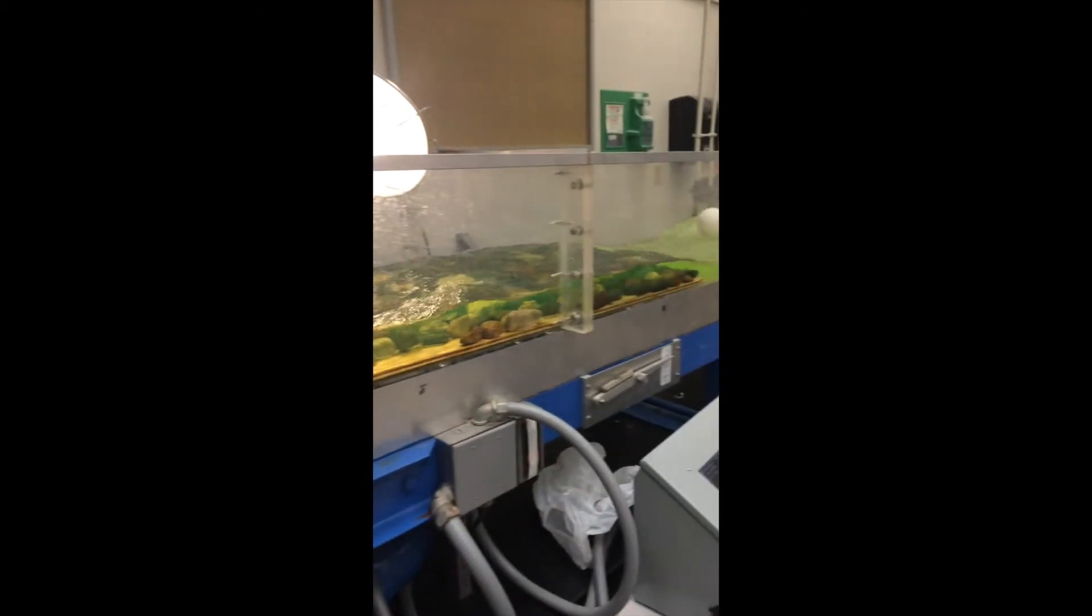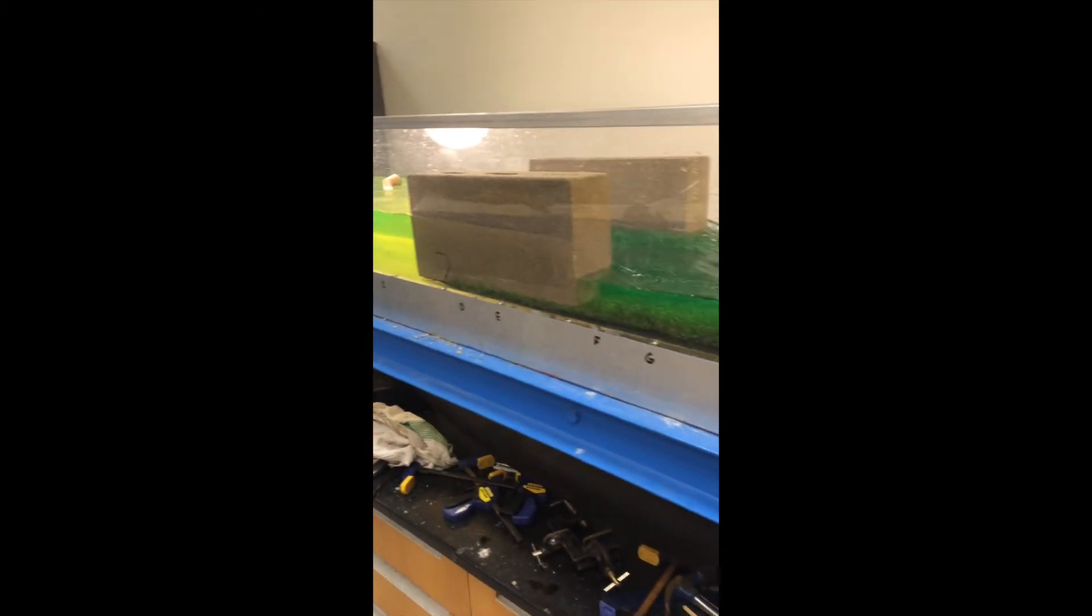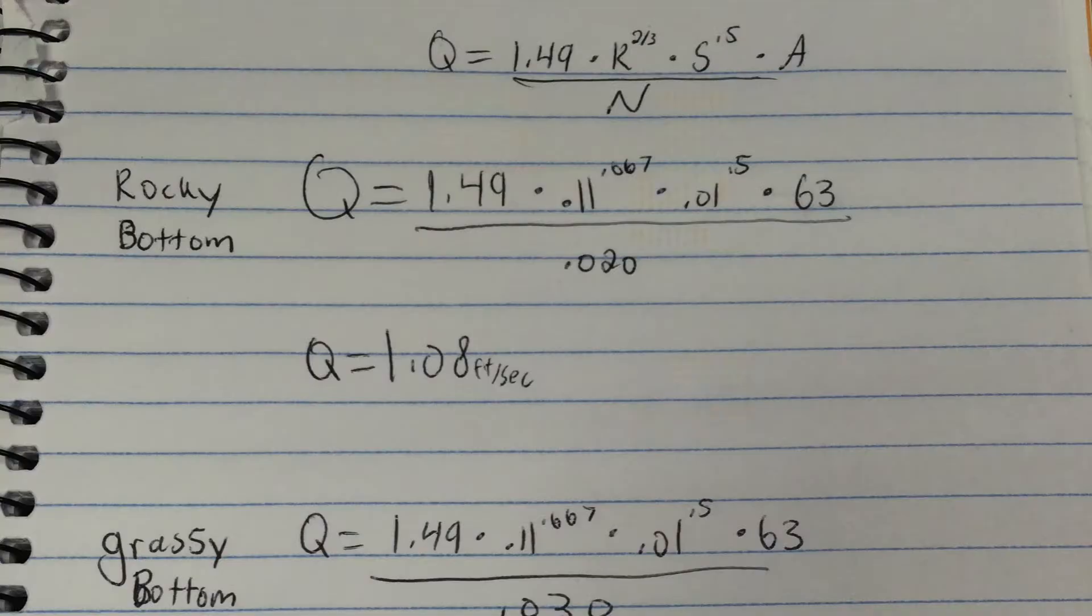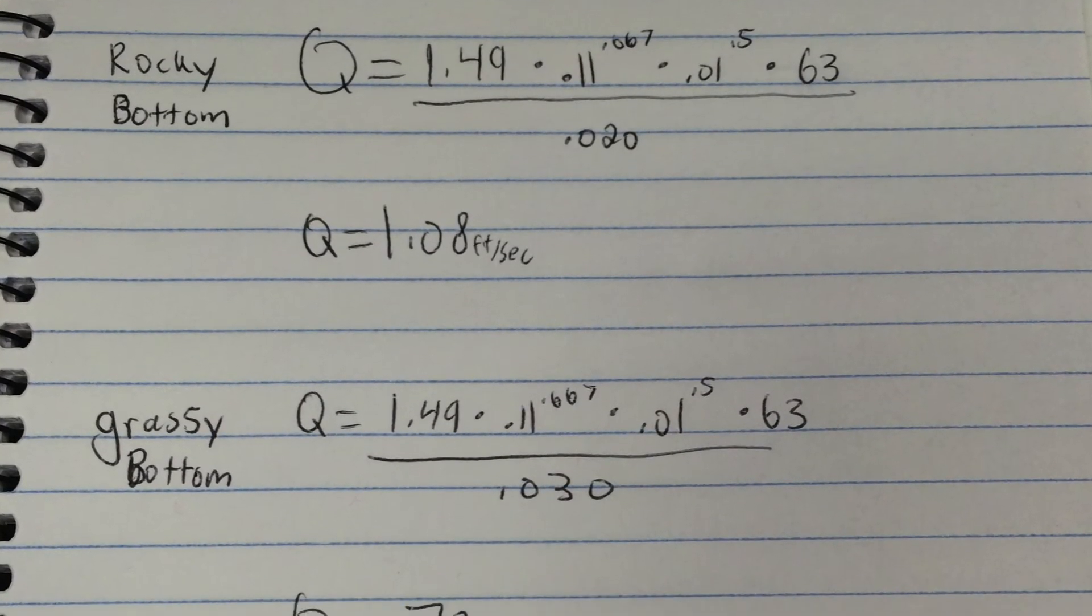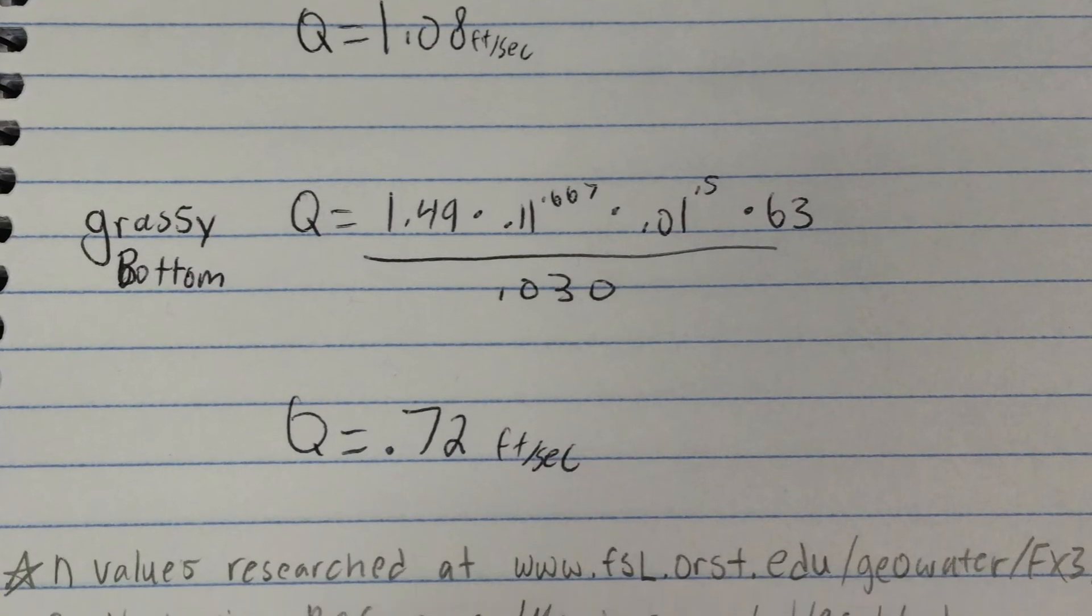We wanted to see what a modest change like changing a rocky bottom to a grassy bottom might do to Manning's equation. Although it's hard to see a difference in the video, this calculation shows how a simple surface change does have a major effect on Manning's equation.